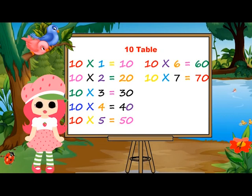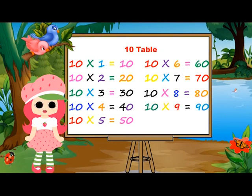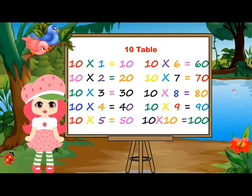10 sevens are 70. 10 sevens are 70. 10 eights are 80. 10 eights are 80. 10 nines are 90. 10 nines are 90. 10 tens are 100. 10 tens are 100.